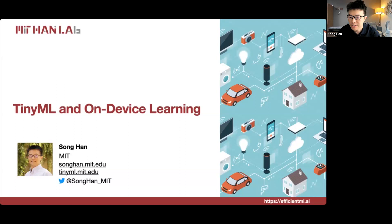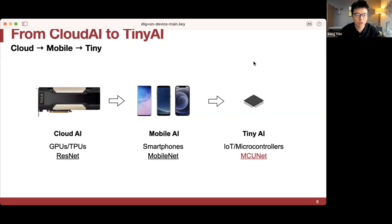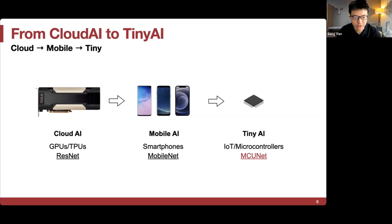Deep neural networks are pretty big, and we always have the dream to deploy these powerful models to edge devices — from cloud AI to mobile AI to tiny AI. The actual resource gap from cloud to tiny is huge: a GPU may have 80 gigabytes of memory while an IoT device may have only a hundred kilobytes of SRAM on chip. We need to bridge that gap, co-designing neural networks with efficient systems to support both inference and training.